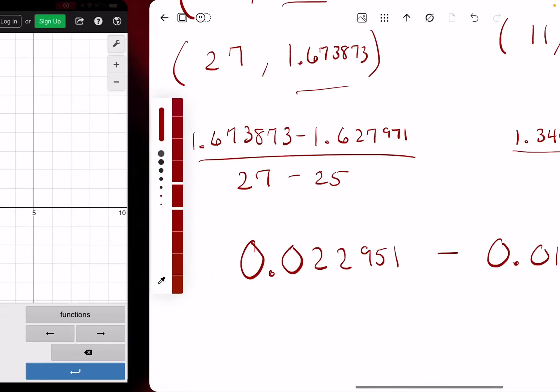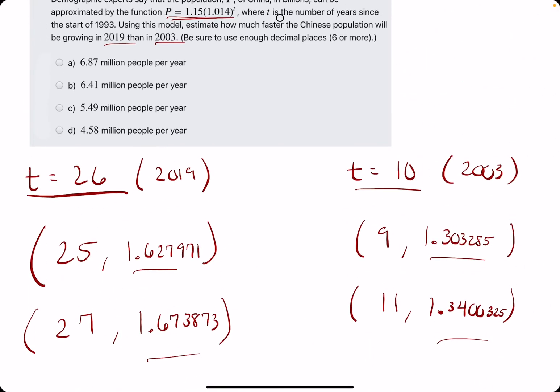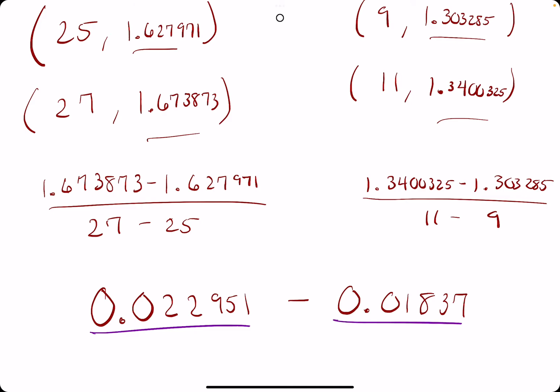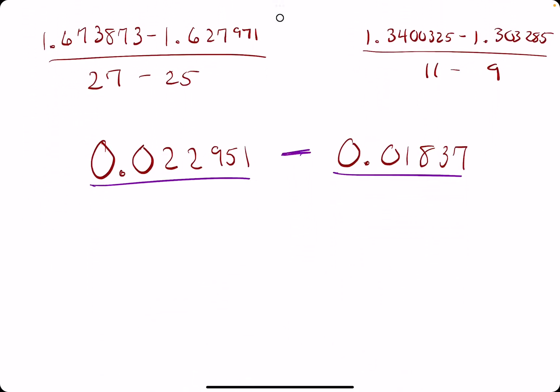All right, so now that we have the rate of change in the year 2019 as well as the rate of change in the year 2003, we want to subtract these two values.